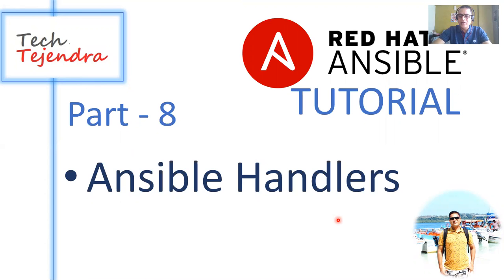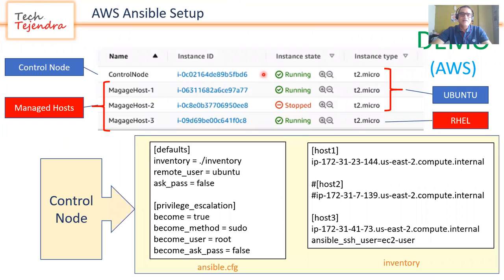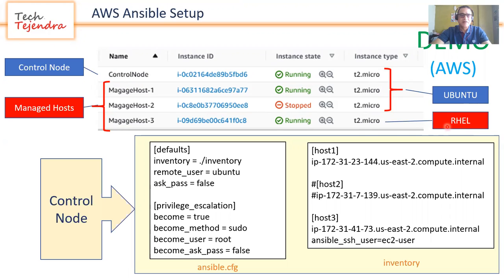To start with, this is our AWS Ansible setup. I have set up all the Ansible environment in an AWS cluster using four virtual machines. One machine is the control node and three machines are managed hosts. The first three machines run Ubuntu and one machine has RHEL — Red Hat Enterprise Linux.